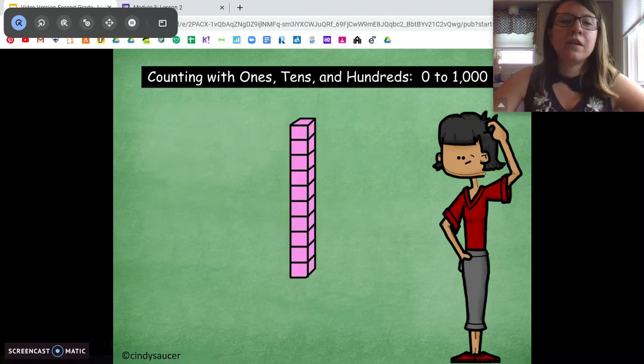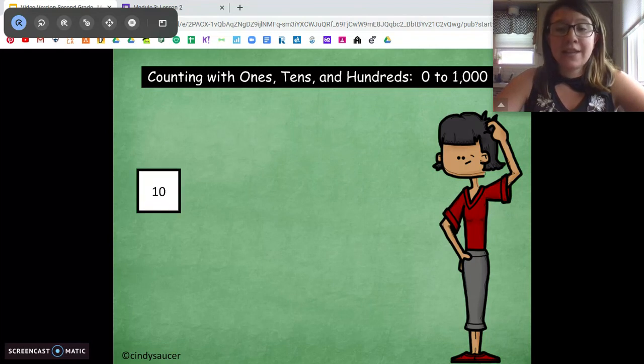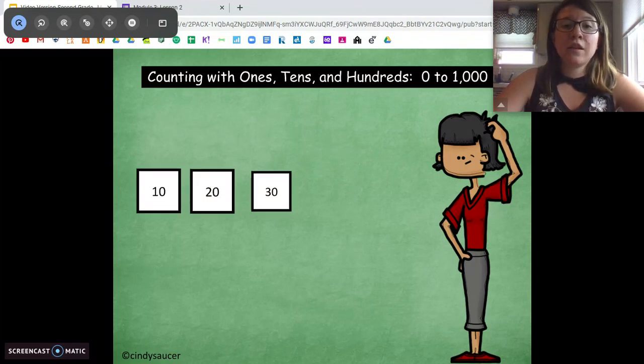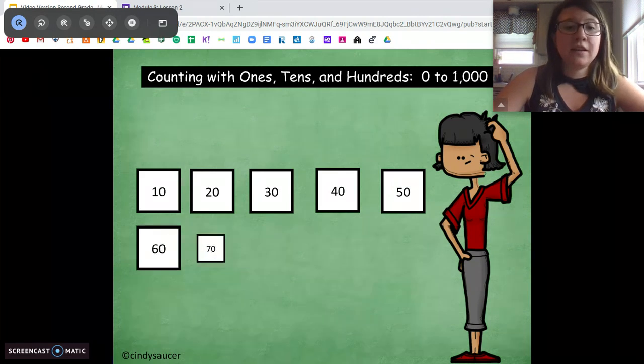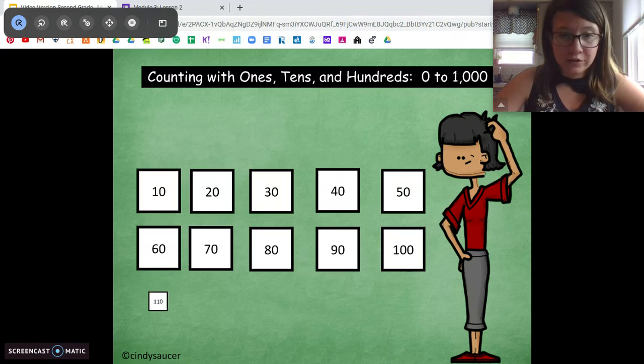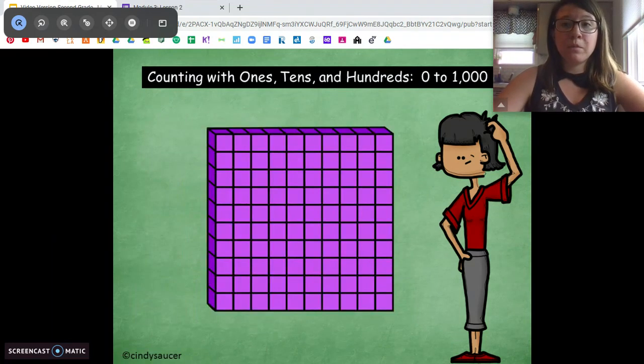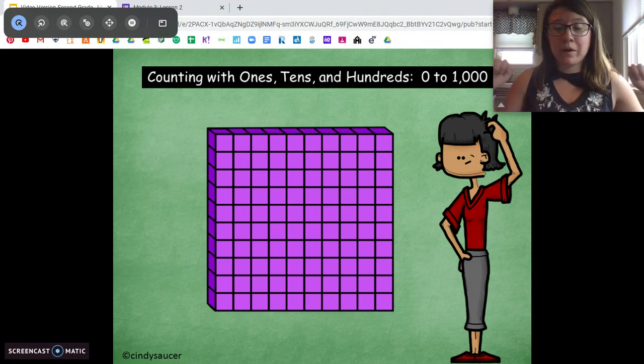You'll see what I mean. So we're starting with tens, so we're going to start counting by tens. Here we go. 10, 20, 30, 40, 50, 60, 70, 80, 90, 100, 110, 120, 130. Oh! Now what are we going to count by?